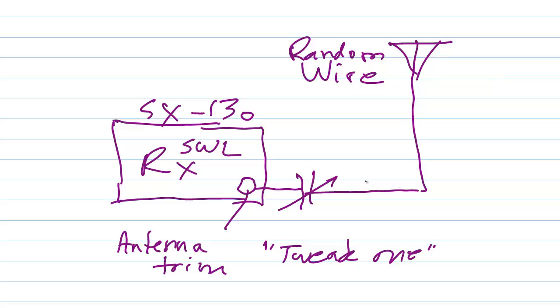But a random wire is not ideally matched to a receiver under most conditions. At certain specific frequencies it will be, but at most frequencies, no. So this little antenna trimmer was supposed to help with that. Sometimes it could help and sometimes not.